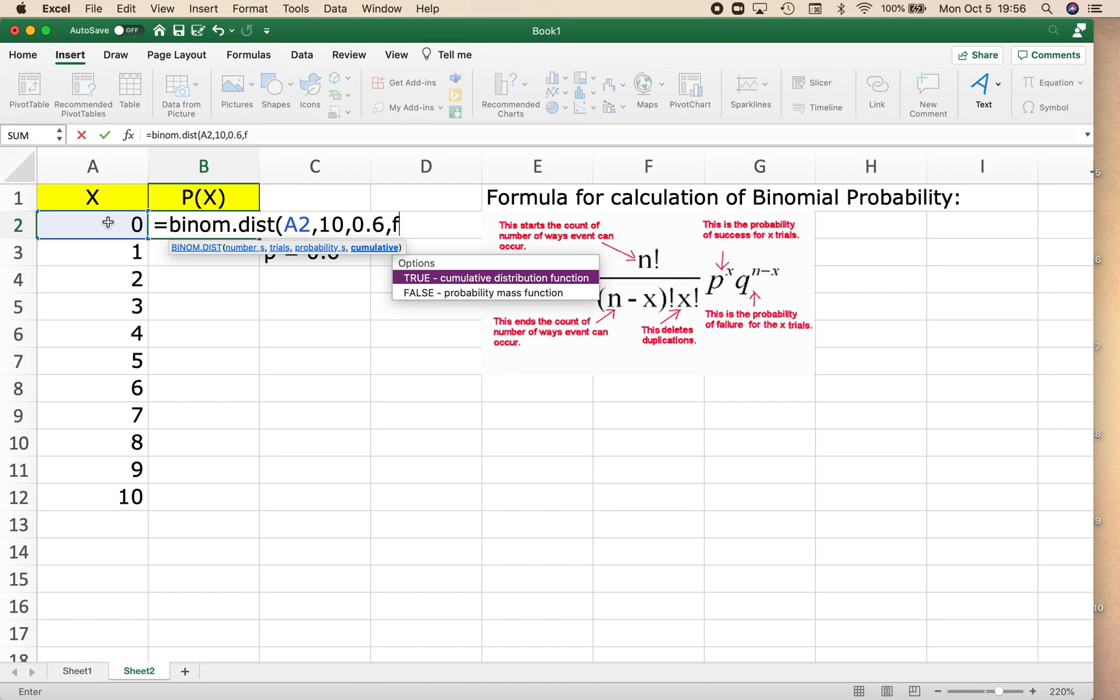We want the probability of just this x value, so we are going to always type in false. For the binomial, you are never going to type in true. You could, but we're not going to. We're always going to do false.